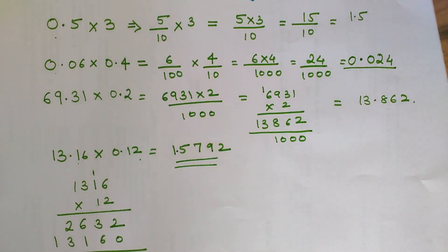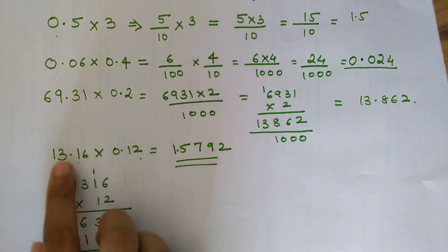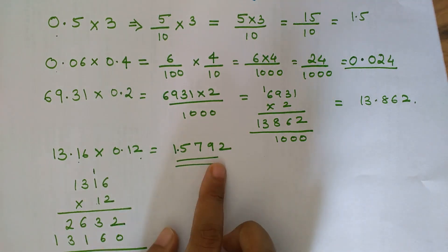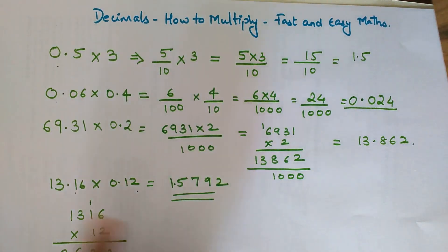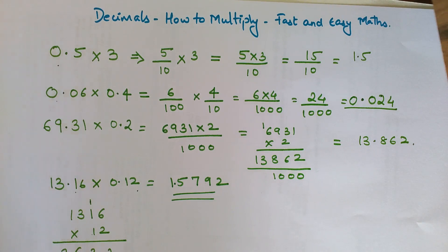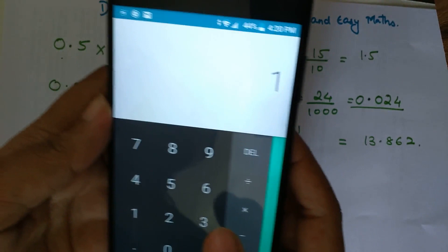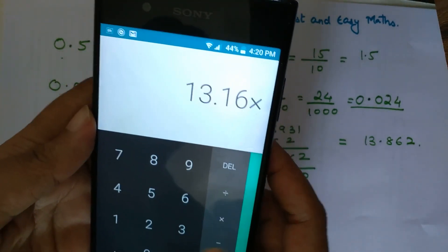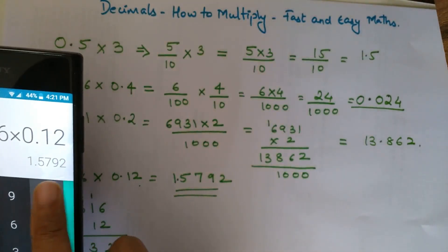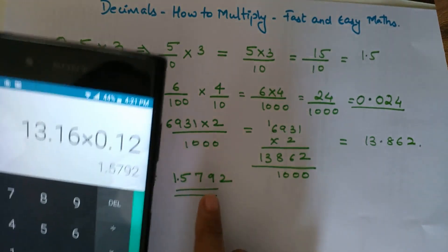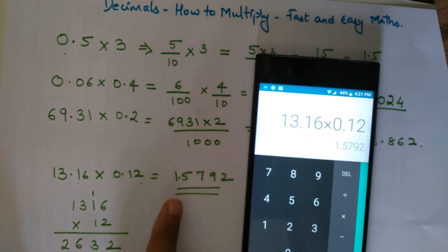Using the logic of adding the digits after the decimal point and putting the decimal point accordingly in your final answer will ensure you never go wrong in multiplication of decimals. Let's cross-verify using a calculator. 13.16 multiplied by 0.12 gives 1.5792, which matches exactly.